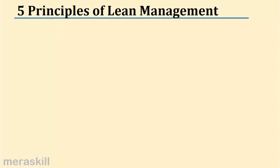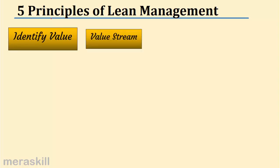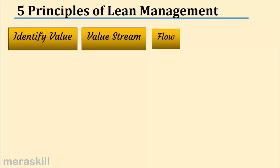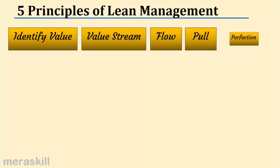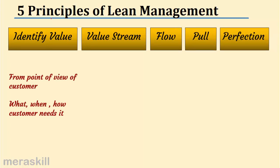The five principles of lean management: the first and foremost is to identify value. Value, I repeat, is from the point of view of the customer — what the customer is willing to pay for. It is very important to understand what the customer needs: what he needs, how he needs it, when he needs it, and what are the activities you do that actually have value for the customer.